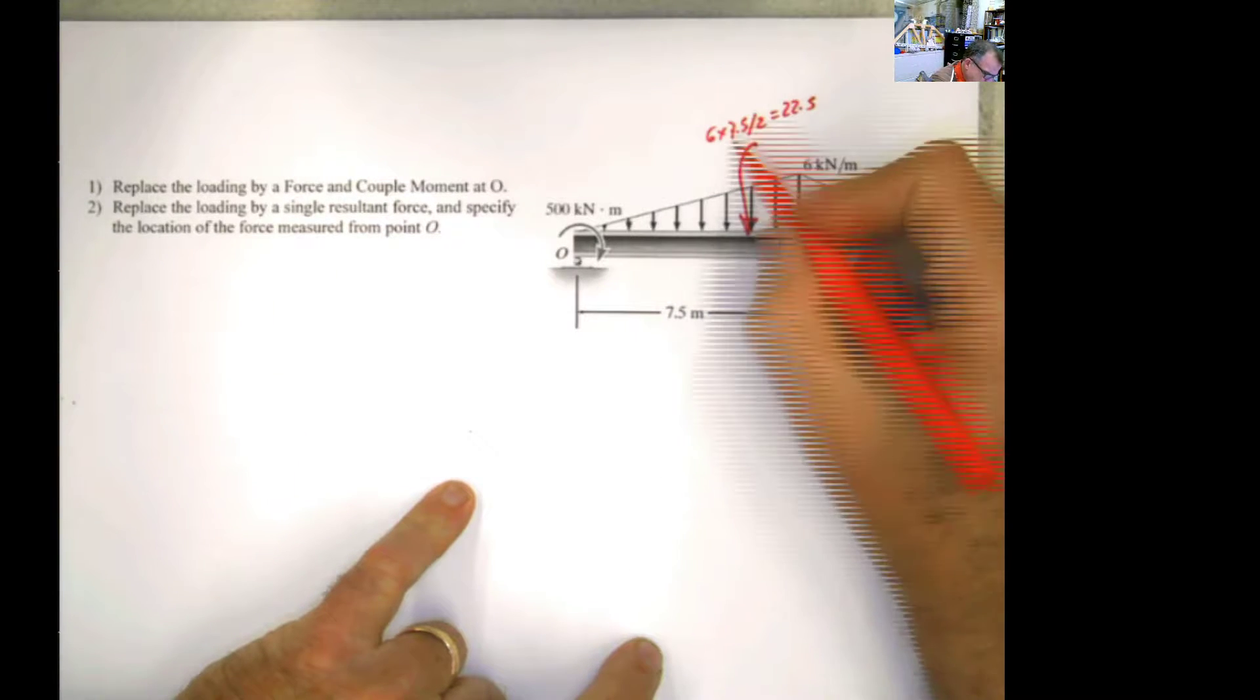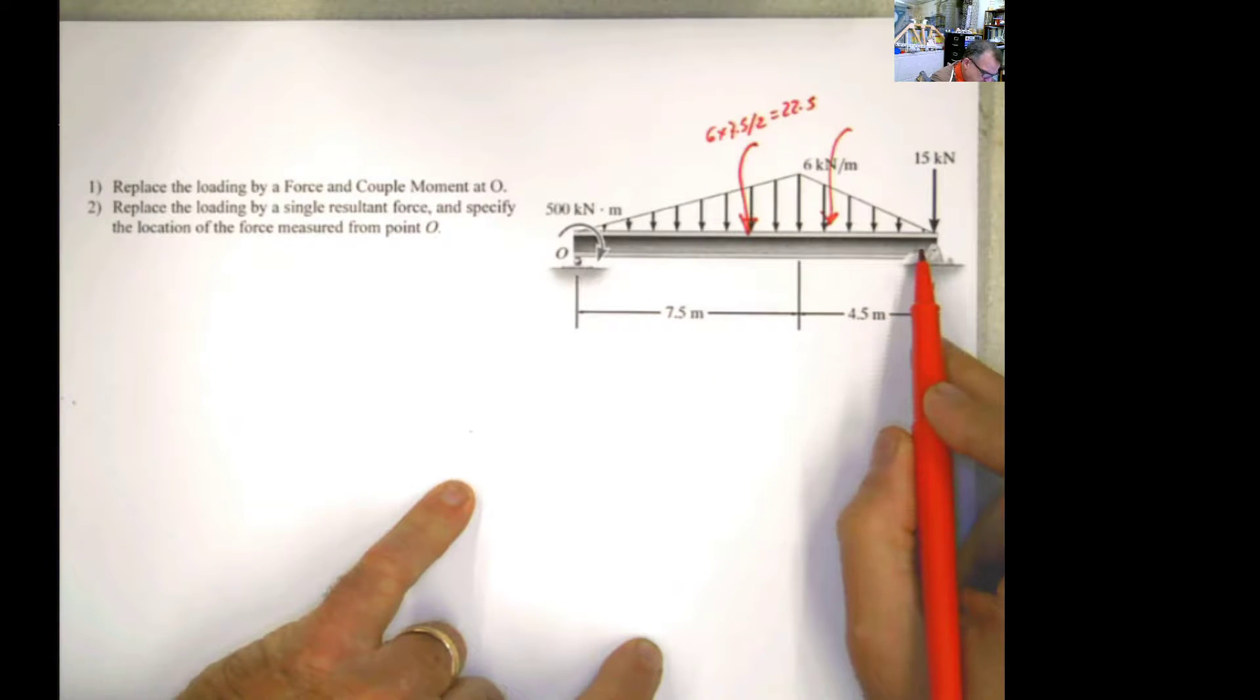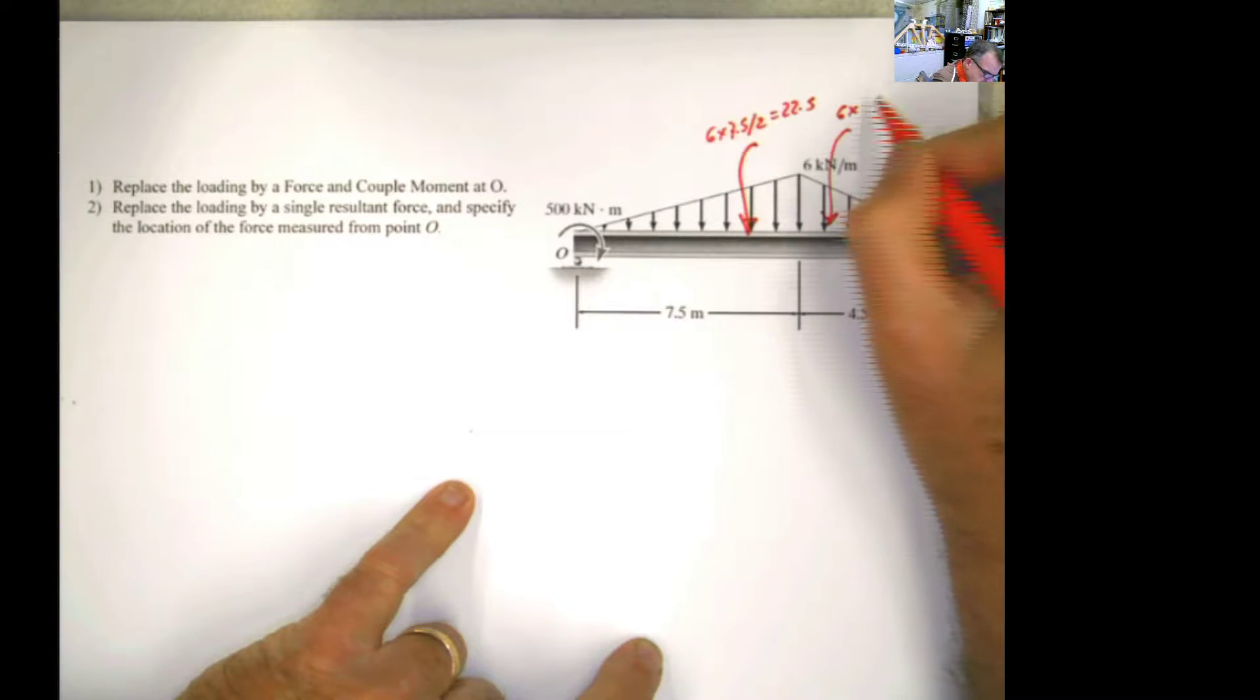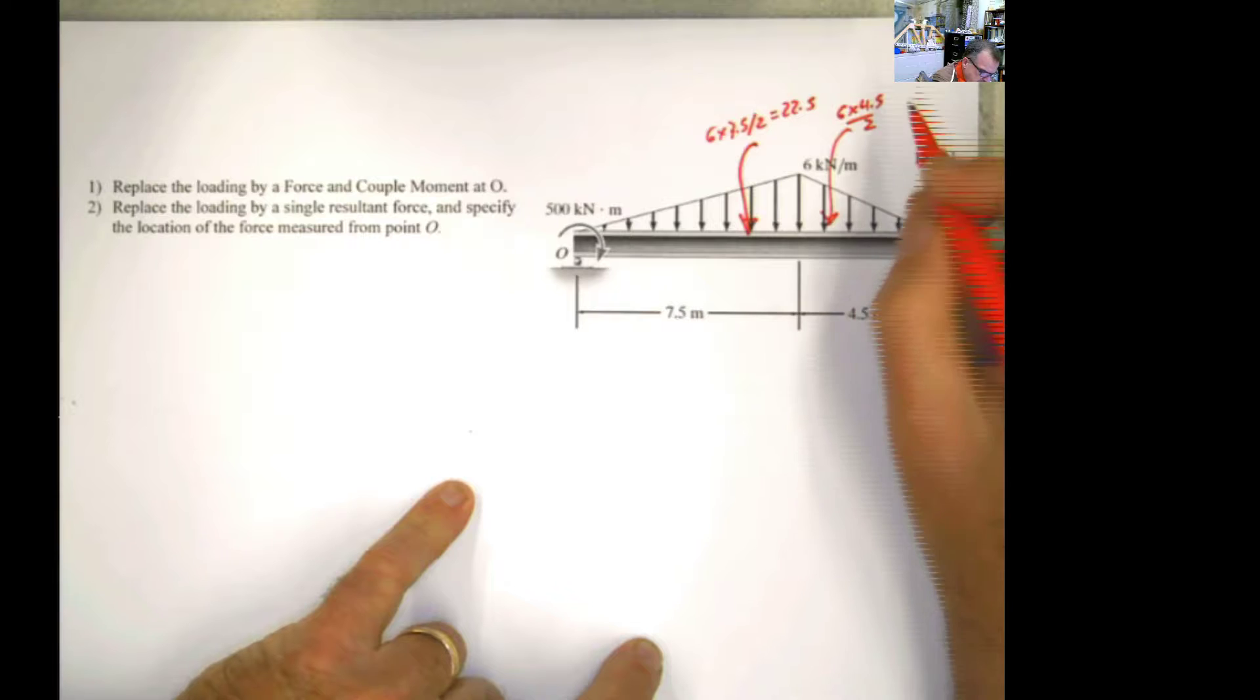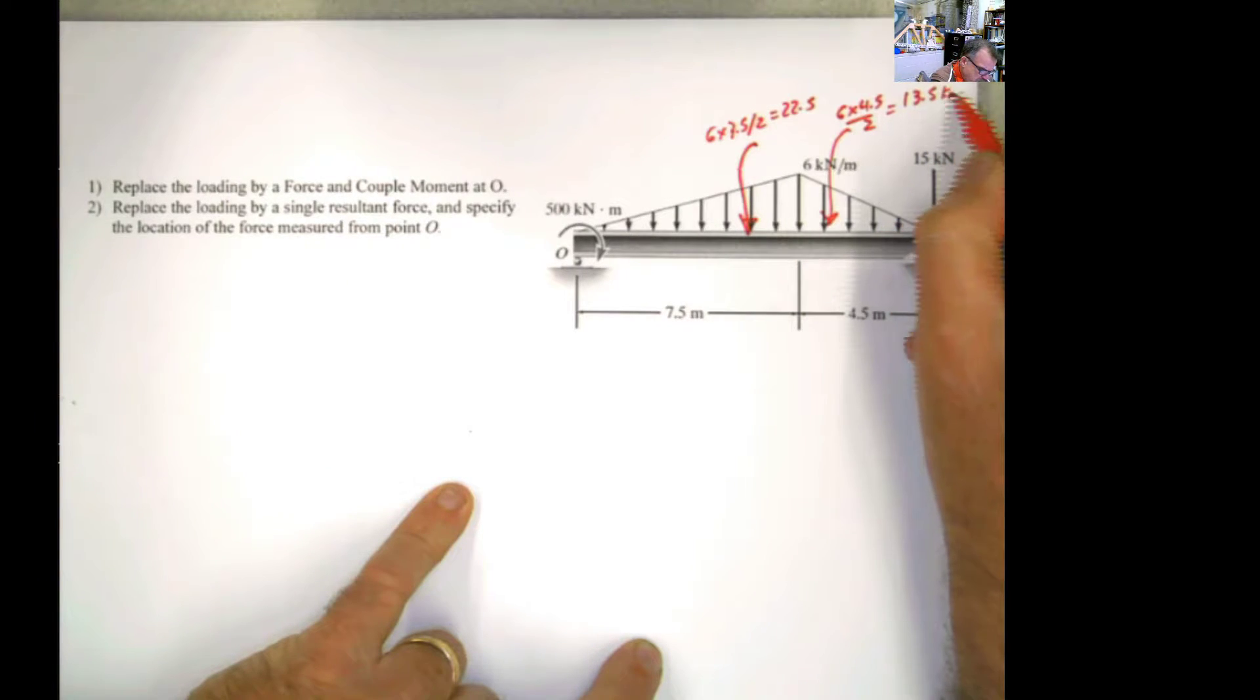And this one also, 6 times 4.5 divided by 2, because it's the area of the triangle. And this is 3 times that, so it's 13.5 kilonewtons.